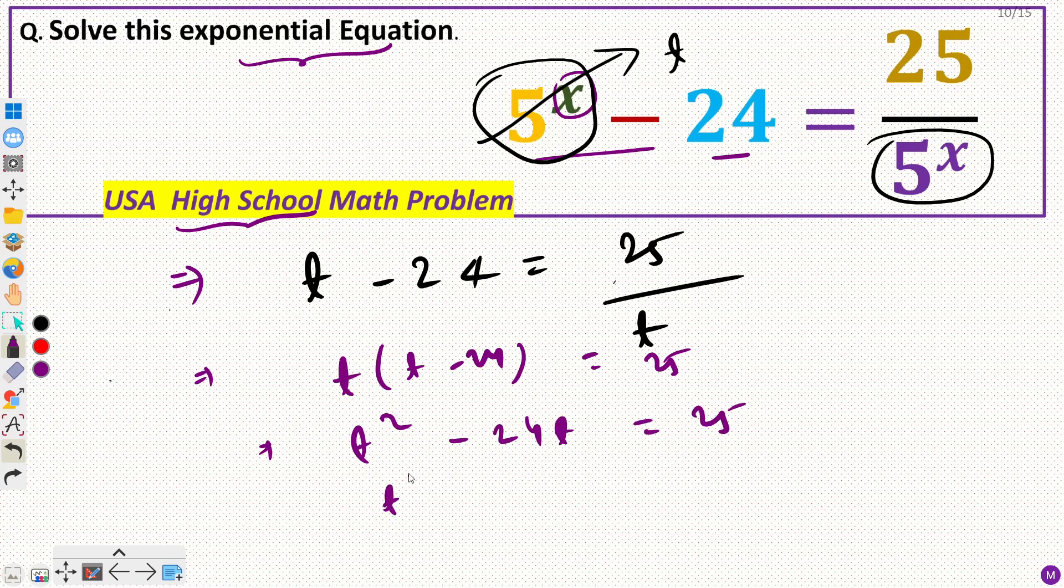So t squared minus 24t minus 25 equals 0. This is my quadratic equation.